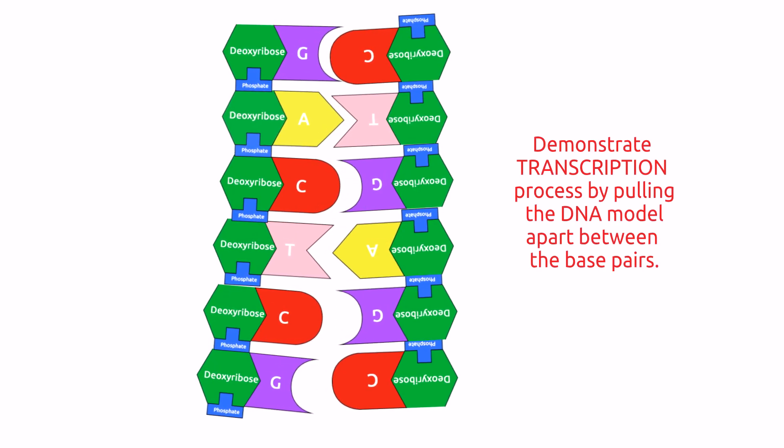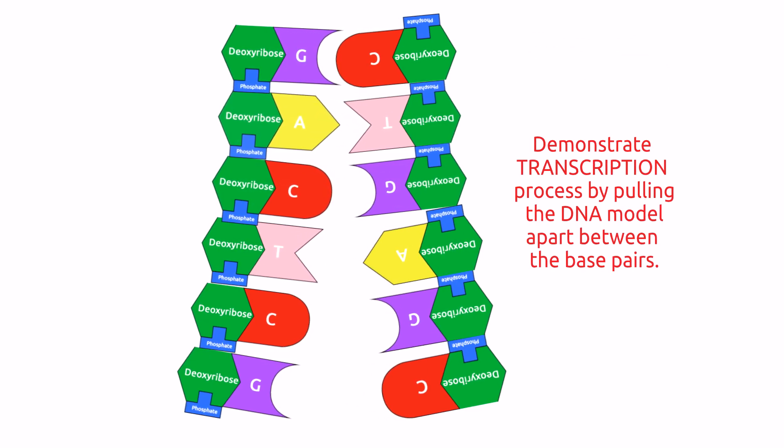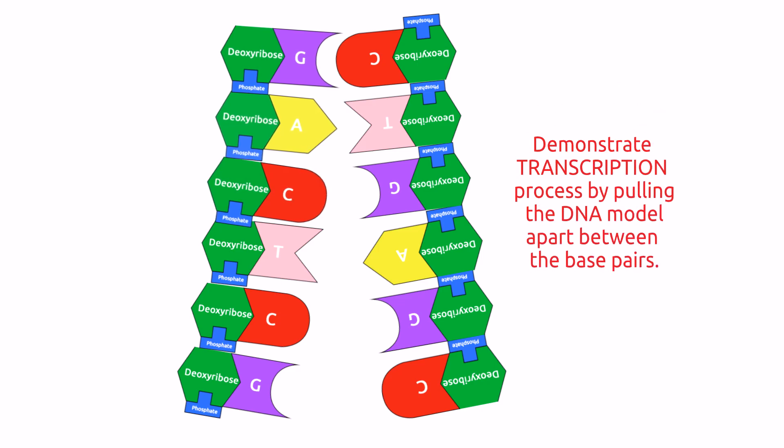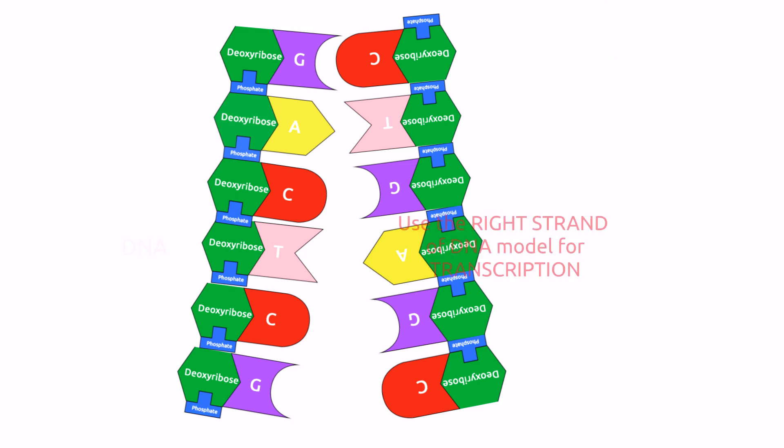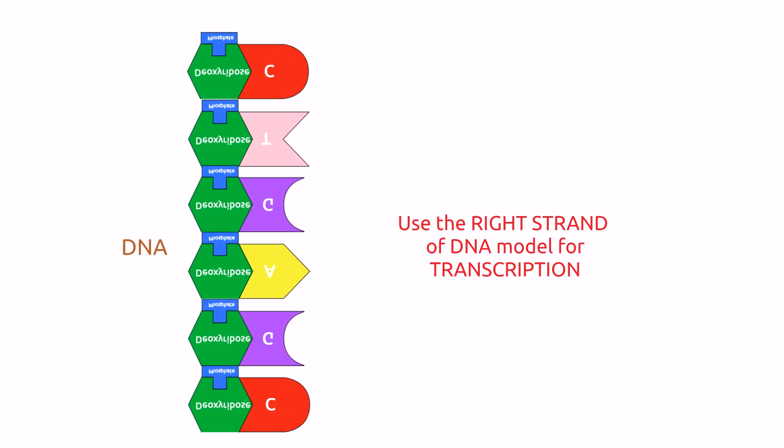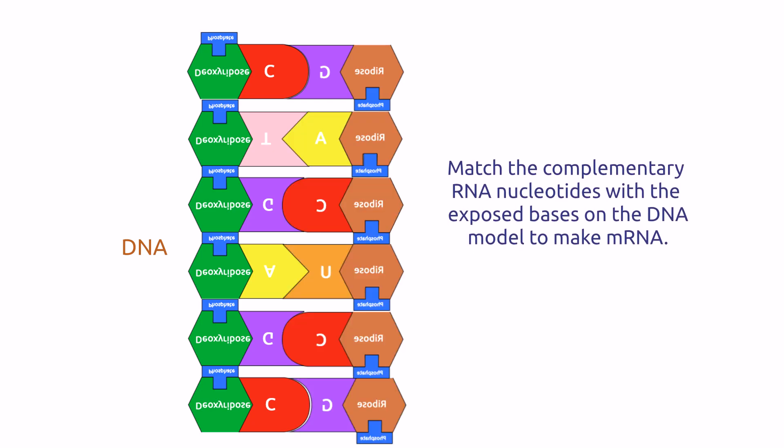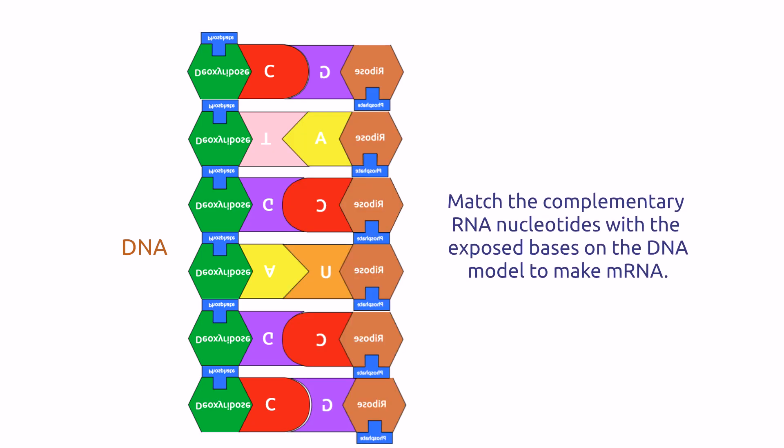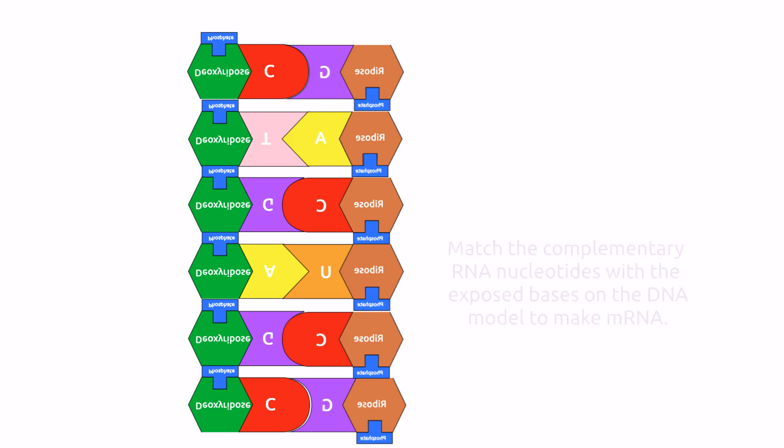After we constructed the double-stranded DNA, we demonstrate transcription process by pulling the DNA model apart between the base pairs. Then using the right strand of DNA model, begin matching the complementary RNA nucleotides with the exposed bases of the DNA model to make RNA. Then if you are done, tape your mRNA molecule and label your work as transcription.